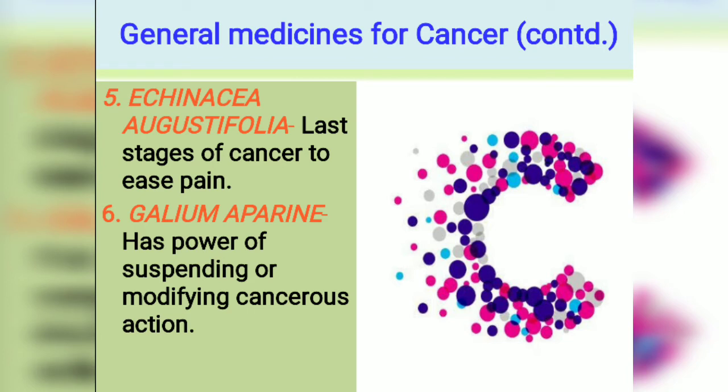Gallium Aparine has the power of suspending and modifying cancerous action — it reduces cancerous growth and action, just like Carbonium Sulphuratum which restrains the growth.